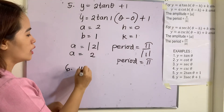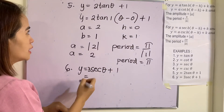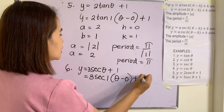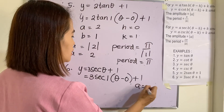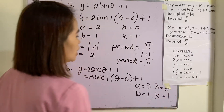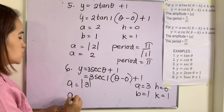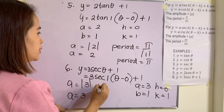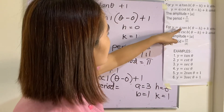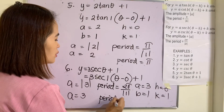Example 6: y = 3·sec(θ) + 1. Written in standard form: y = 3·sec(1·(θ − 0)) + 1. So a = 3, b = 1, h = 0, k = 1. The amplitude is |a| = |3| = 3, and the period is 2π/|b| = 2π/|1| = 2π.